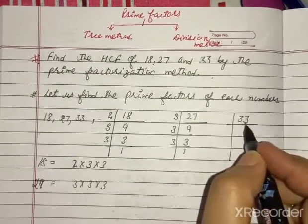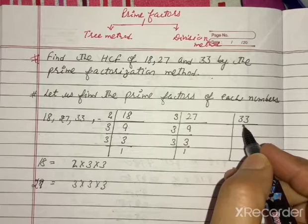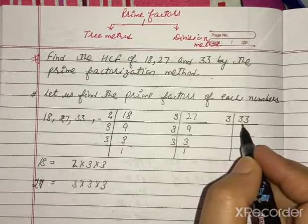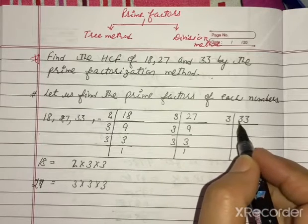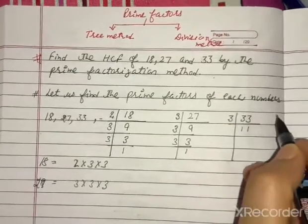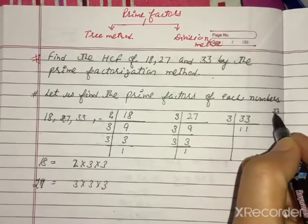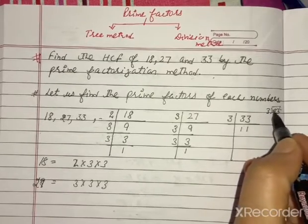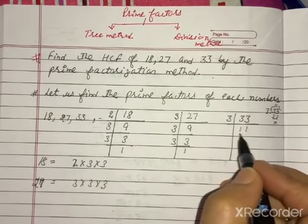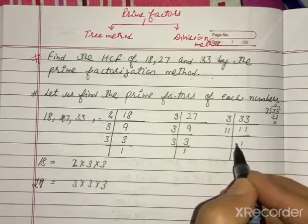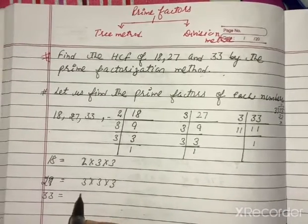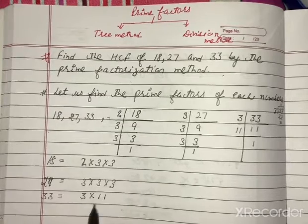In the same way we find the factors of 33. We know 33 is not in the table of 2, so we start with 3. Dividing 33 by 3 gives 11, since 11 threes are 33. Now 11 is a prime number — 11 ones are 11. So the prime factors of 33 are 3 and 11.